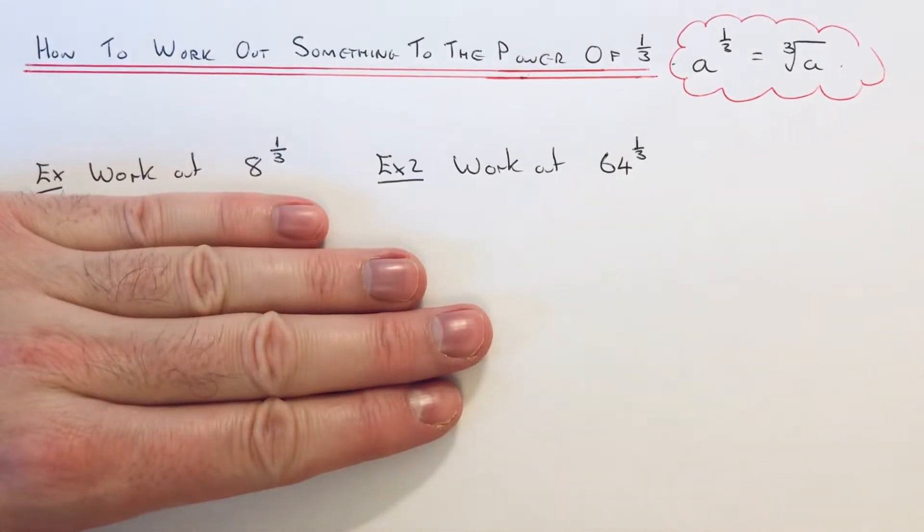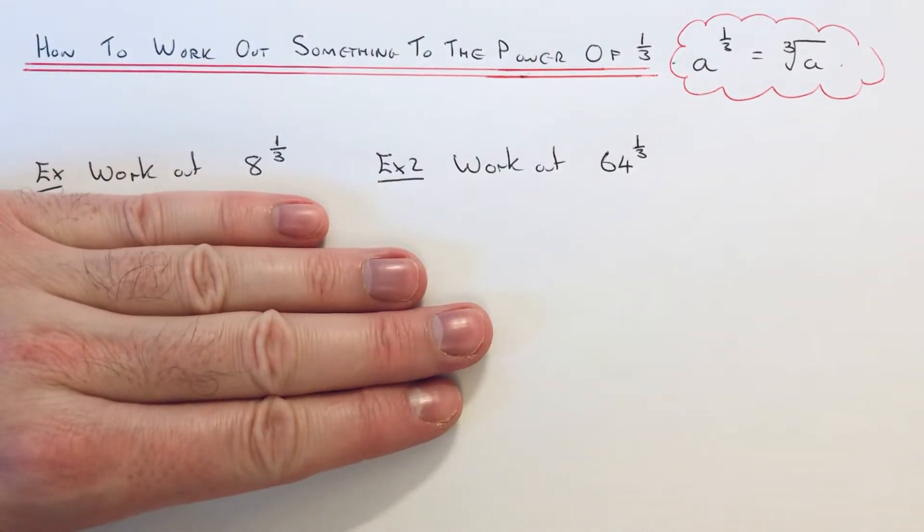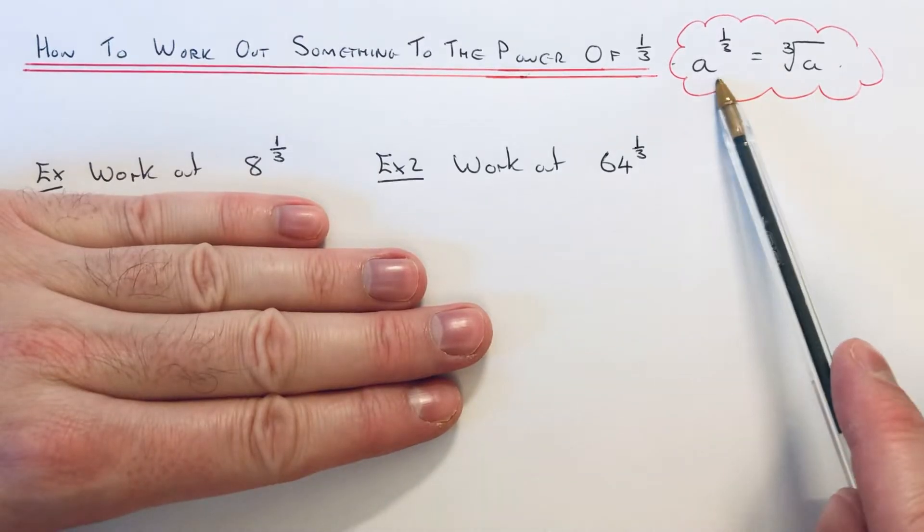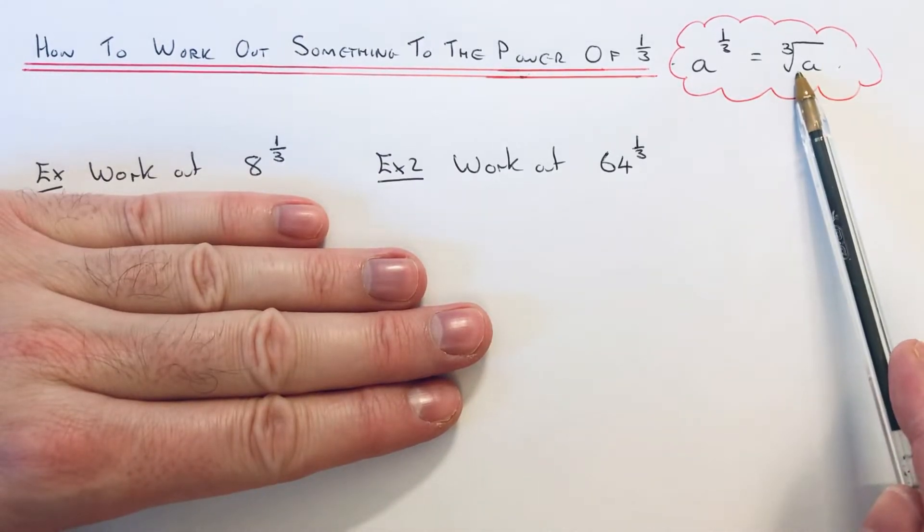Hi guys, welcome back. This is Maths3000. Today I'm going to show you how to work out a number to the power of one third. So to do this you just need to cube root the number.